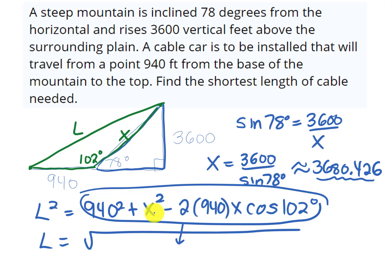Minus 2 times 940 times answer times cosine of 102 degrees. And when I do that, I get 3,983.43 feet.